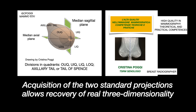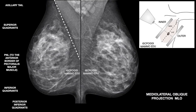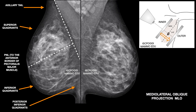Mammography is two-dimensional, but acquiring the two standard projections enables you to recover near three-dimensionality. This is the cranial caudal projection, CC, with superimposition of superior on inferior tissues — showing the outer quadrant, axillary tail, inner quadrant, and cleavage. This is the mediolateral oblique projection, MLO, with superimposition of inner on outer tissue. The superior and inferior quadrants are defined with respect to the PNL — posterior nipple line. This is the axillary tail. This portion, called the posterior inferior quadrant, is just above and in front of the IMF, very important to show in an MLO view.